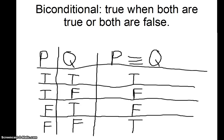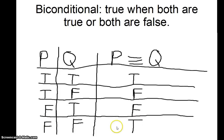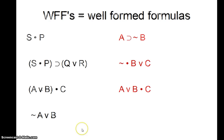Finally, there's the biconditional — P triple-bar Q, meaning 'P if and only if Q.' You can think of it as 'if P horseshoe Q, and if Q horseshoe P.' It's true whenever P and Q have the same truth value. Example: 'I'll jump off a cliff if and only if you do.' If you jump and I jump, true. If neither of us jumps, true. But if you jump and I don't, or I jump and you don't, it's false. In the next video, I'll go over well-formed formulas and give more practice on determining the truth of compound statements.